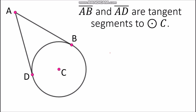From the tangent segments theorem, there are two conclusions to be drawn. First, we can say that the tangent segments are congruent. The tangent segments here are segment AB and segment AD, so our first conclusion is: segment AB is congruent with segment AD.